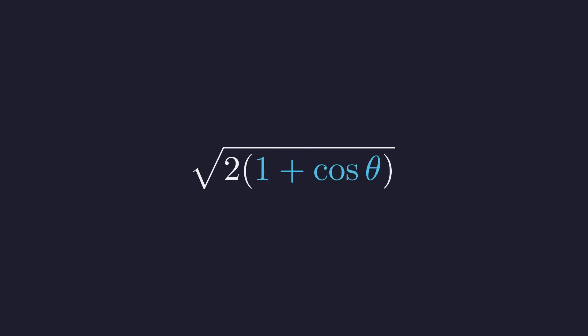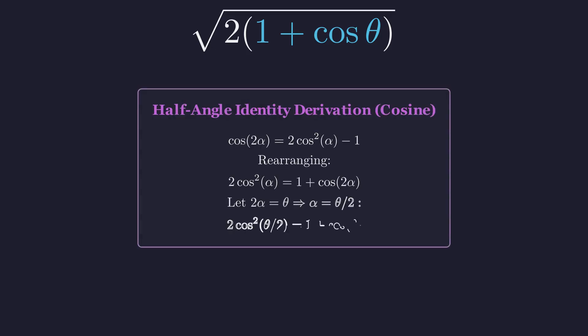Let me show you exactly how this works. The half-angle identity comes from the double angle formula: cosine of 2α equals 2 cosine squared α minus 1. Rearranging this, we get 2 cosine squared α equals 1 plus cosine of 2α. Now if we let 2α equal θ, then α equals θ over 2. Substituting this in, we get 2 cosine squared of θ over 2 equals 1 plus cosine θ.